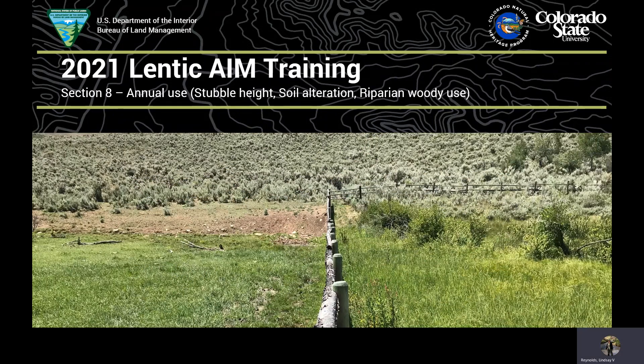This presentation for the Lentic AIM training is on Section 8.0 Annual Use, which is a suite of three methods: stubble height, soil alteration, and riparian woody use, inside of the draft field protocol for lentic riparian and wetland systems. You can follow along on page 124 in your manual.